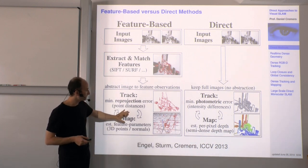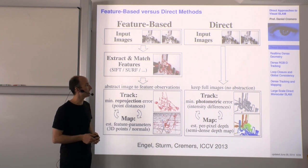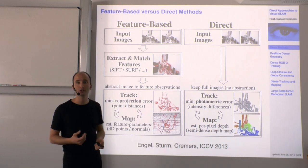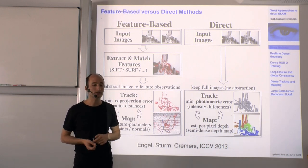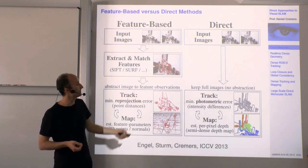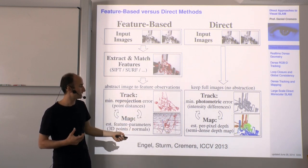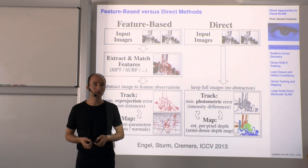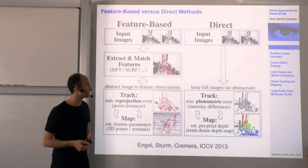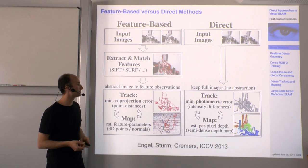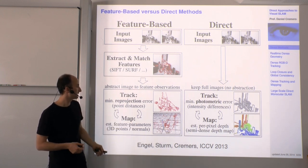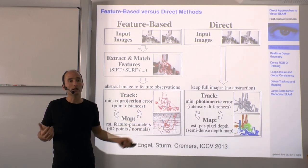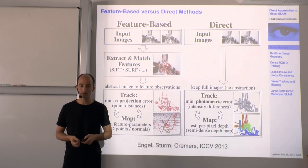Although these techniques tend to work, there is an expectation that if we circumvent the intermediate step of feature extraction, feature matching, and correspondence finding, and work directly on the images to get 3D geometry and camera motion, we get better, faster, more accurate, and more robust results. In terms of geometric reconstruction, we also get more dense results — rather than a sparse point cloud, we get a dense or at least semi-dense reconstruction.